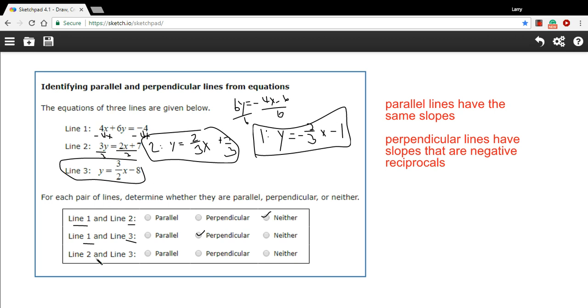And then let's check lines 2 and 3. So 2 has a slope of 2 thirds. 3 has a slope of 3 halves. They're not the same, so they're not parallel. They're not perpendicular either. Even though they're reciprocals, they're not negative reciprocals. So these two are neither parallel nor perpendicular.